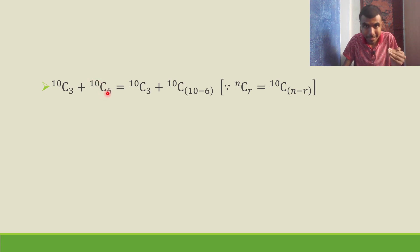Now 10C6 is nothing but 10C(10-6). There is a property nCr equals nC(n-r). Sorry for this, this should be nCr, nC(n-r), editing mistake. So nCr is nC(n-r), that means 10C6 will be 10C(10-6). So this will be 10C3 plus 10C4.